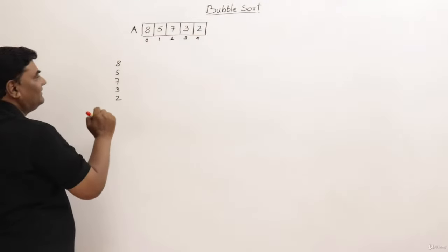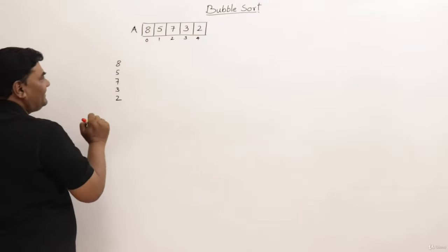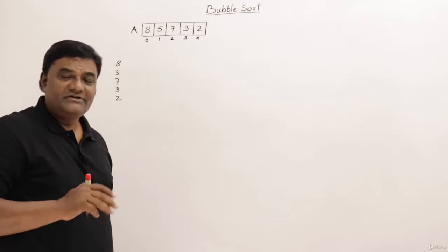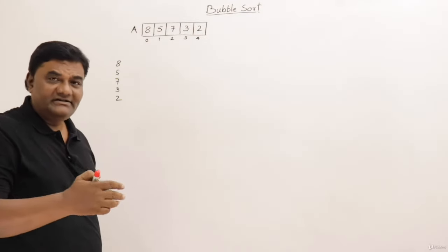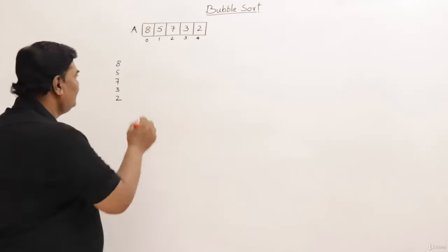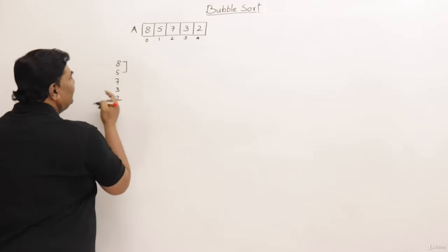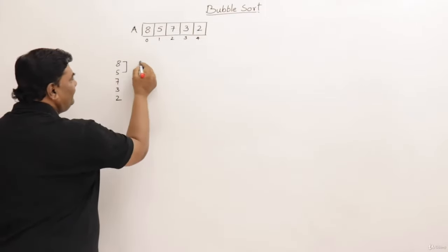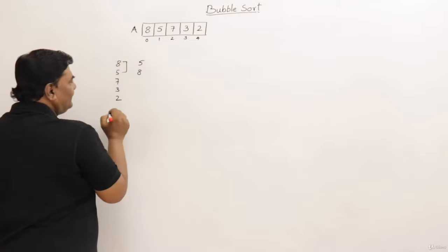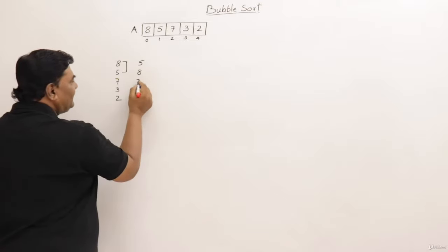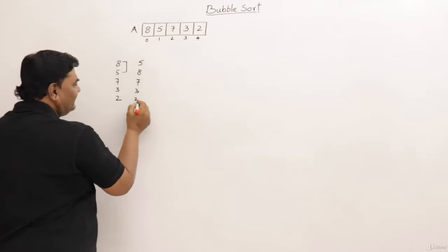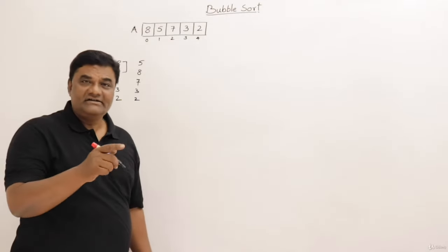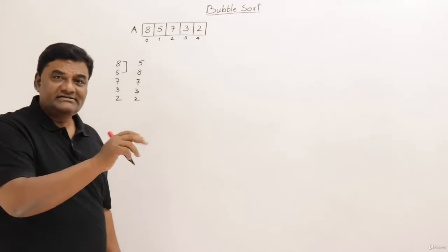Bubble sort compares consecutive pairs of elements every time. If the first element is greater than the second element, it will interchange them. So comparing the first two: eight is greater than five, so five will move up and eight will come down. The remaining elements stay as they are. This was the first comparison, and since the first element was greater, it has interchanged.